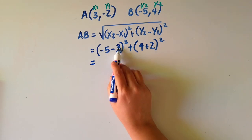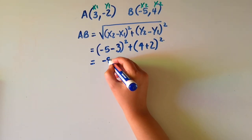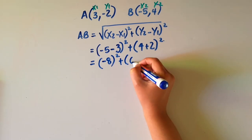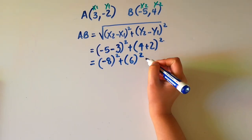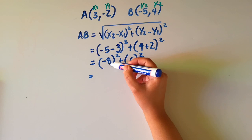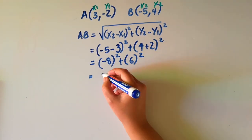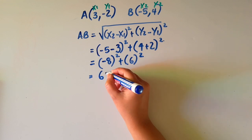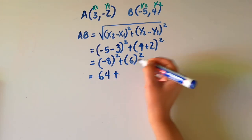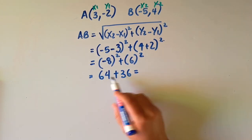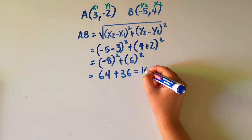Minus 5 minus 3 will give me minus 8 squared, plus 4 plus 2 is 6 squared. Minus 8, as we all know, is minus 8 times minus 8, which will give us positive 64, plus 6 squared is 36. 64 plus 36 will give me 100.